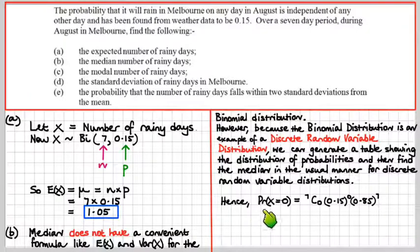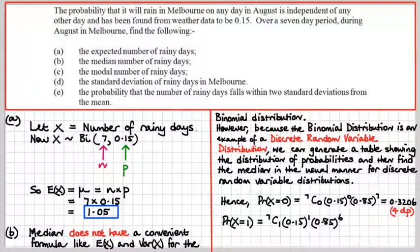We know that the probability that X equals 0, according to our formula for the binomial, would be 7C0 times the probability of success to the 0 times the probability of not success to the 7. That comes to 0.3206 to four decimal places. The probability that X equals 1, same thing except putting 1 for the value of X. 7C1, 0.15 to the 1, 0.85 to the 6, which equals 0.3960.